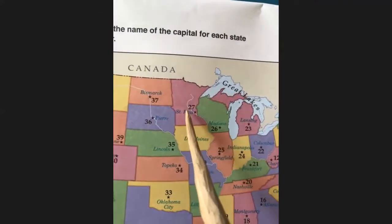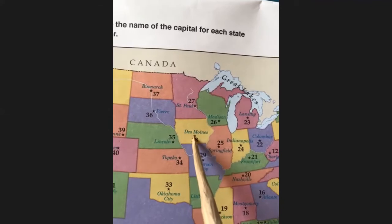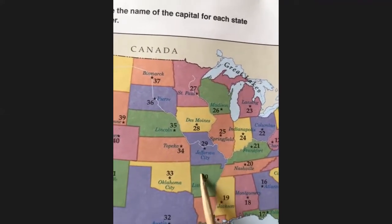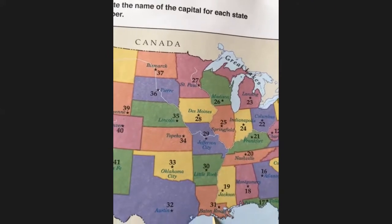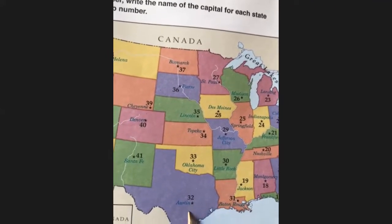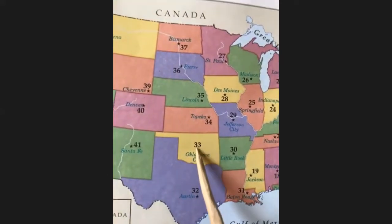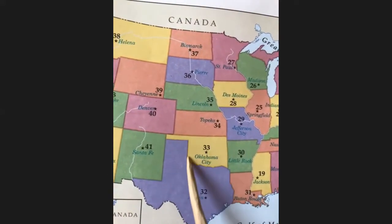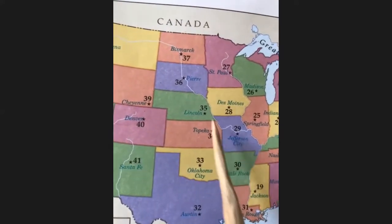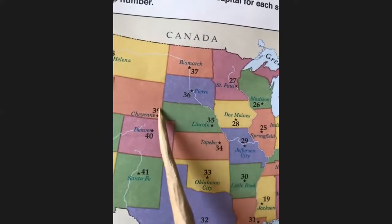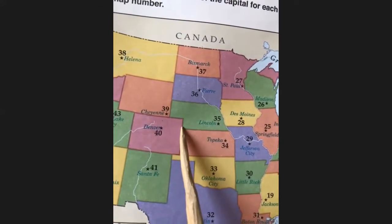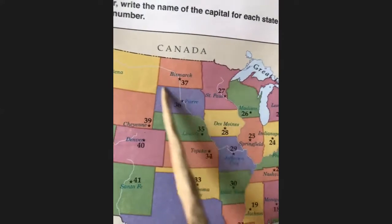Austin — Texas. Oklahoma City — Oklahoma. Topeka — Kansas. Lincoln — Nebraska. Pierre — South Dakota. Bismarck — North Dakota. Helena — Montana. Cheyenne — Wyoming. Denver — Colorado. Santa Fe — New Mexico.